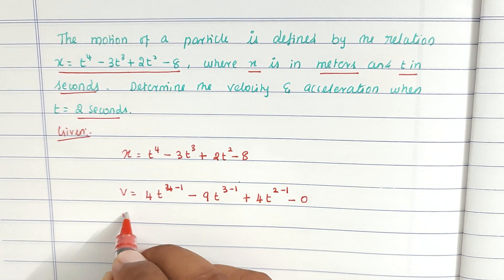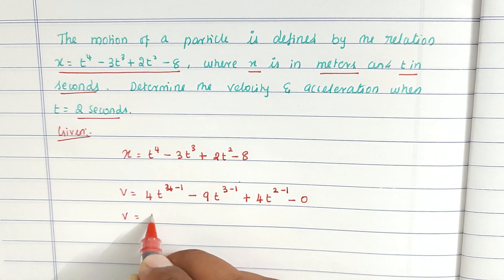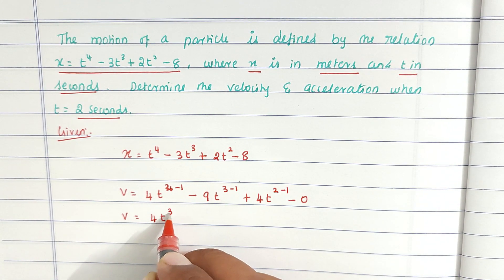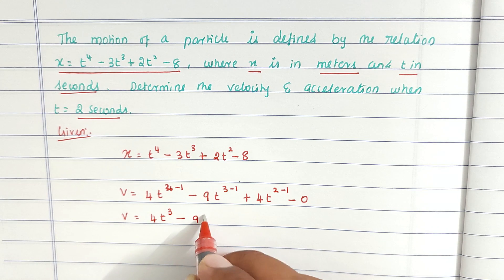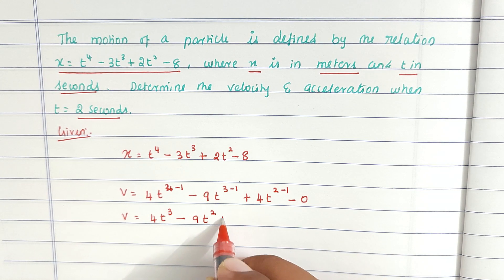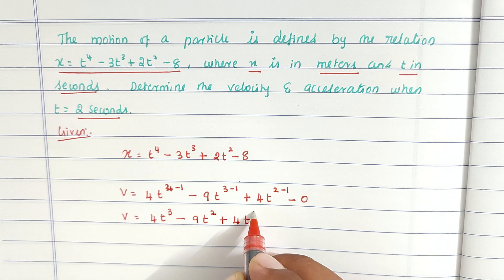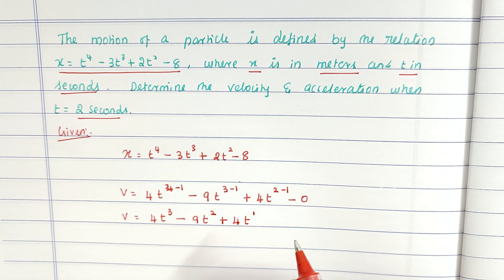Solving this, v equal to 4t power 3 minus 9t power 2 plus 4t. This is equation 1.